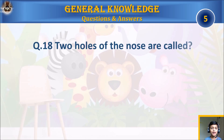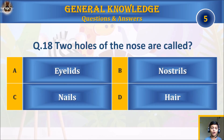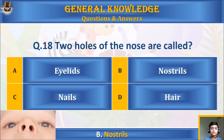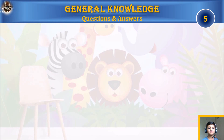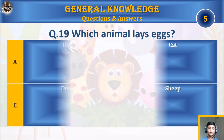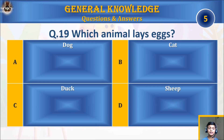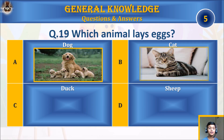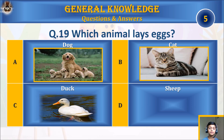Question eighteen: the two holes of the nose are called: A) eyelids, B) nostrils, C) nails, or D) other? Your time starts. The answer is B) nostrils.